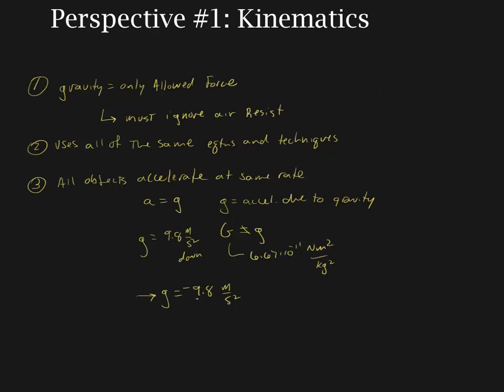You should not automatically assume that it's negative 9.8, because that negative sign is indicating down. And down could be a positive direction, and you have to pay attention. Even your textbook examples will sometimes say that positive is in the downward direction, and so that becomes a big deal.